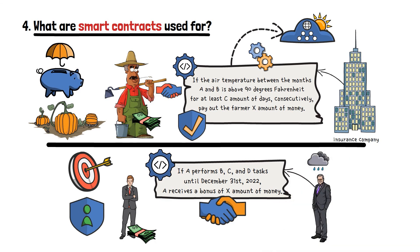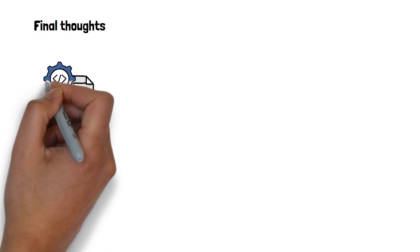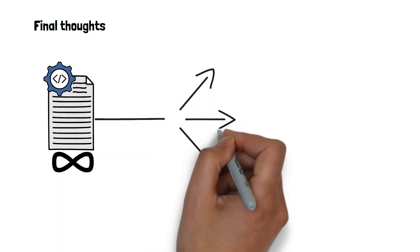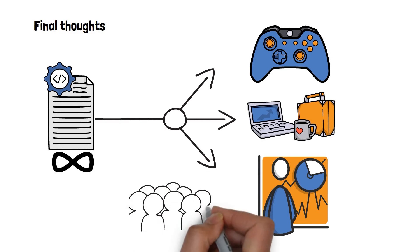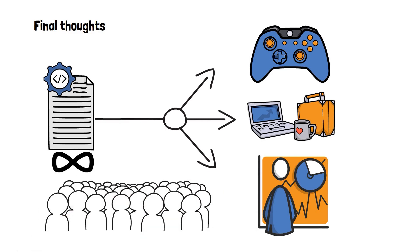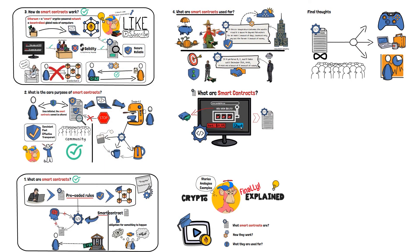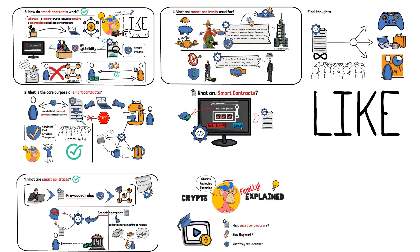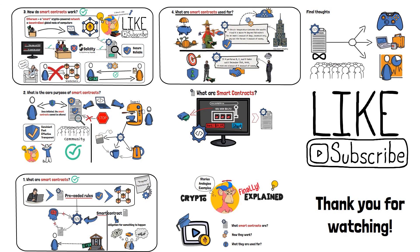These are just a couple of examples that illustrate the potential of smart contract technology. Truth be told, the opportunities for smart contract application are vast. This technology can be incorporated into a huge variety of different areas, and smart contracts are making their way into the mainstream as we speak. So, in this video, we've covered all of the essential information you need to know about smart contracts — what they are, how they work, and the variety of different ways we can use them. If you've enjoyed the video, don't forget to give it a thumbs up and subscribe to our channel. Thank you so much for watching — I hope you've learned something new, and see you in our next video!